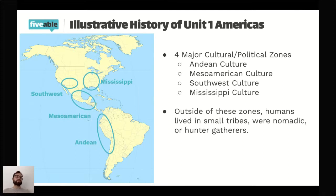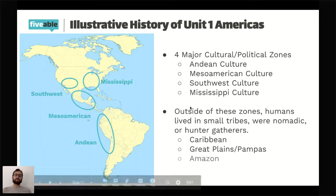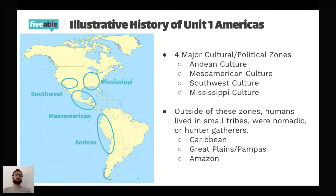Outside of these zones, humans still lived — I don't want you to think there weren't people in the Americas. But outside these zones, humans lived in much smaller groups where one village's culture might be totally different from the next. Regions such as the Caribbean, the Great Plains, the Pampas of Argentina, and the Amazon rainforest had people living in hunter-gatherer or nomadic societies. They just didn't form a large enough group to constitute what we'd consider a cultural zone.